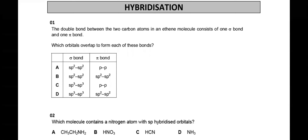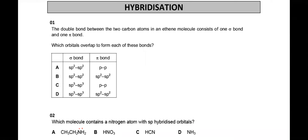Next question: which molecule contains a nitrogen atom with SP hybridized orbitals? In the first compound — ammonia — nitrogen has three bonds to hydrogen and one carbon, making three sigma bonds with a lone pair. Counting the sigma bonds, this gives more than two sigma bonds.